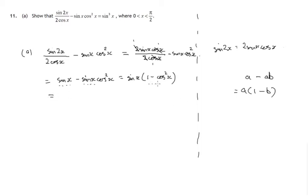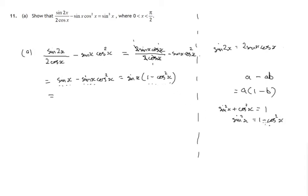Looking at 1 minus cos squared x, let's think of a formula. One of the formulae we know is that sine squared x plus cos squared x is equal to 1. This looks very similar. Suppose we take cos squared x away from both sides — now that looks like a good simplification. So 1 minus cos squared x can be replaced by sine squared x, giving us sine x times sine squared x.